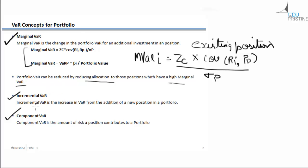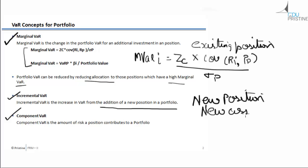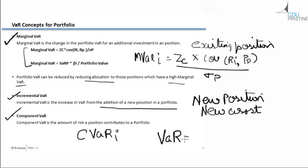Incremental VaR is the increase in VaR from the addition of a new position in a portfolio — note that this is altogether a new asset being added, unlike Marginal VaR which involves additional investment in an existing position. Component VaR, denoted CR_i, is the amount of risk a particular position contributes to a portfolio. The total VaR of the portfolio equals the summation of CR_i from i equals one to N.